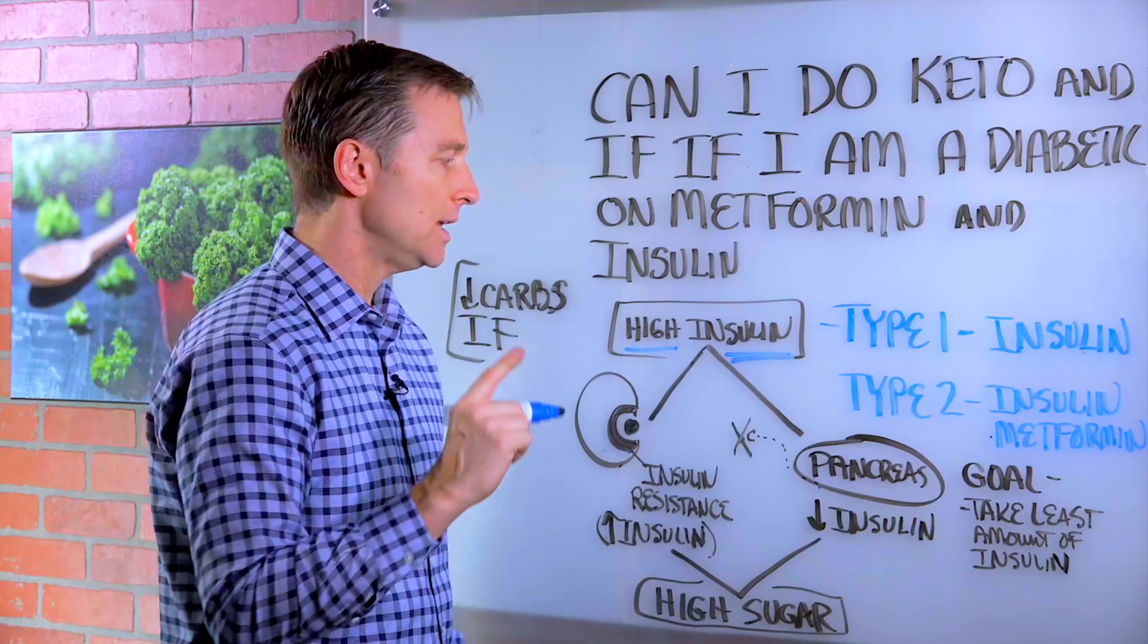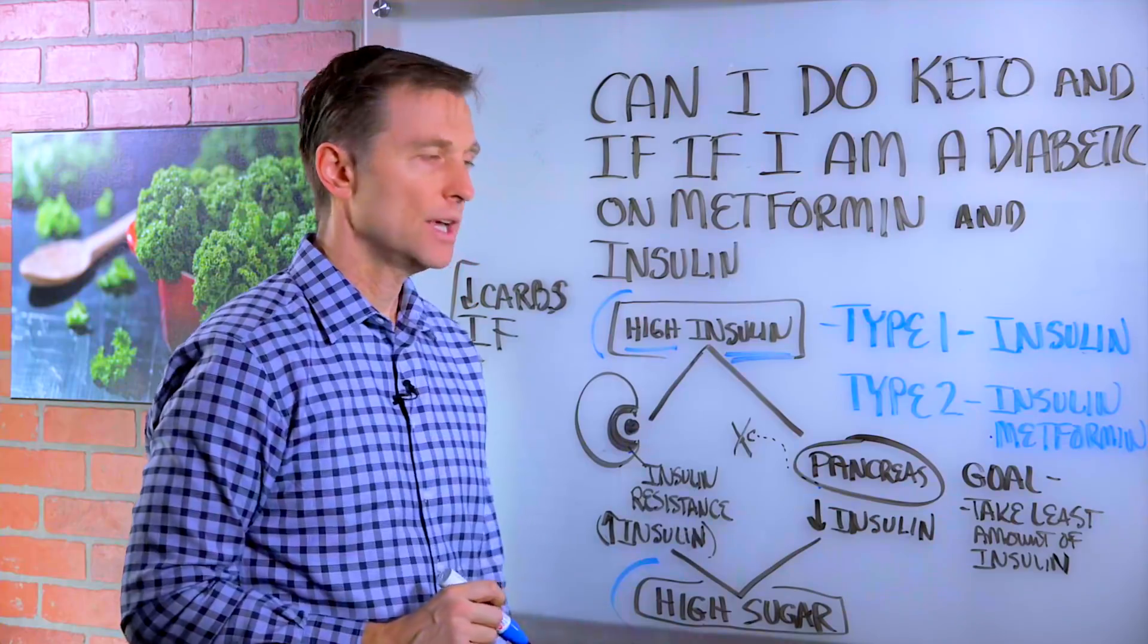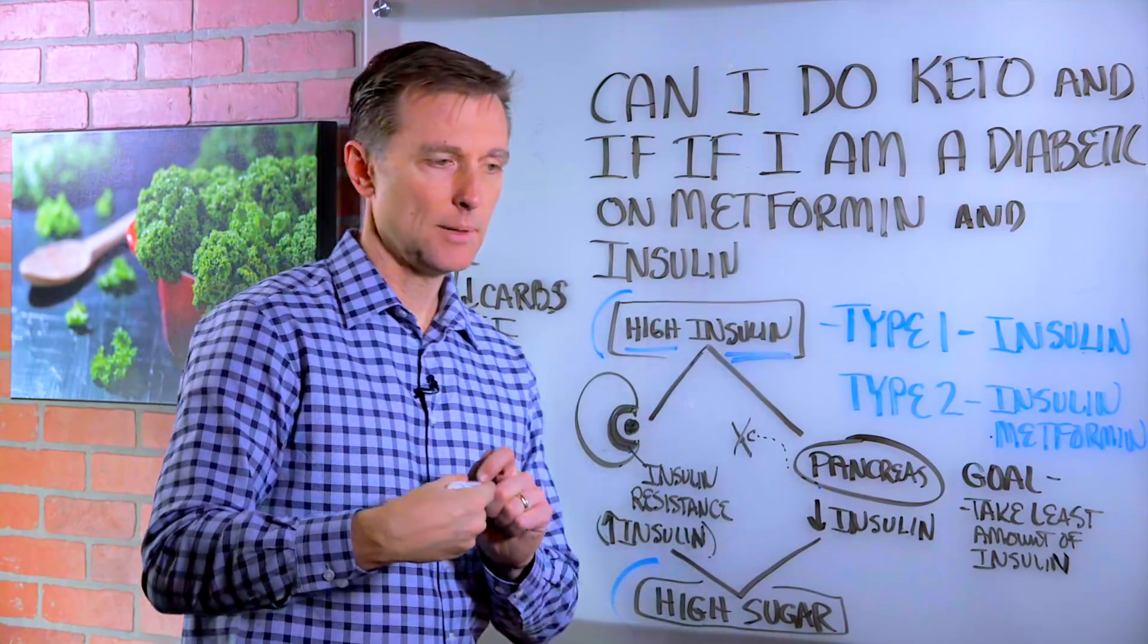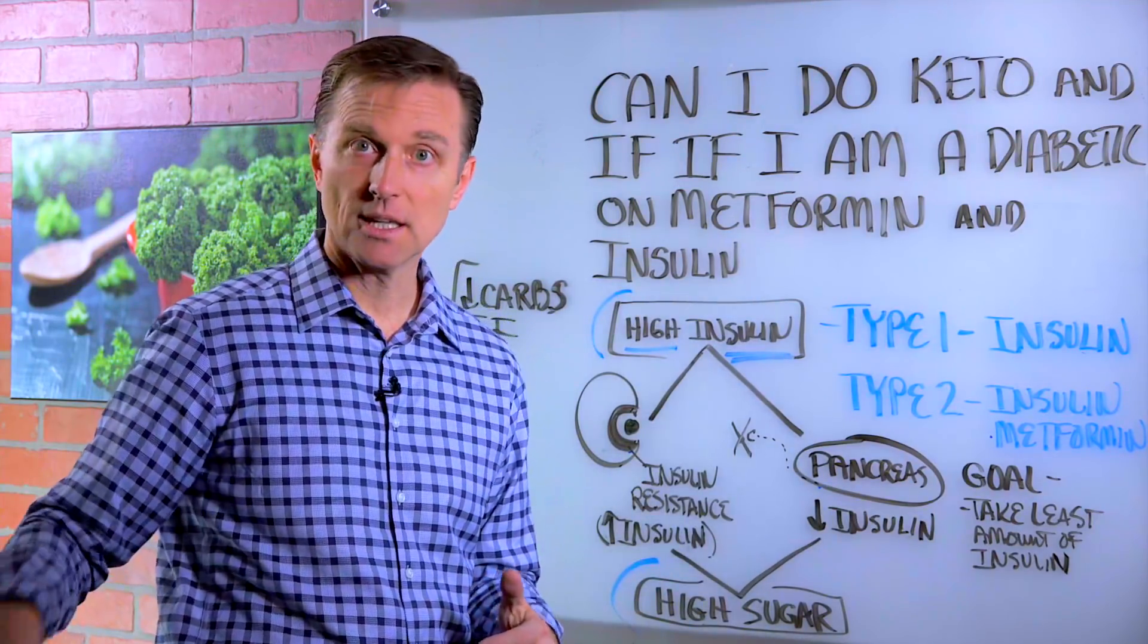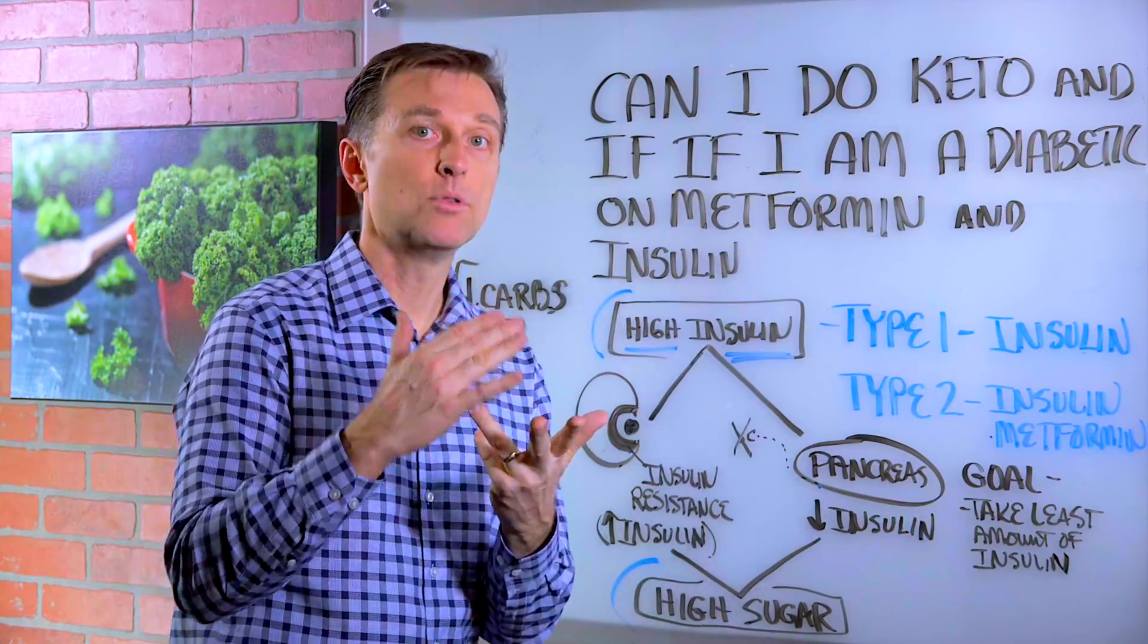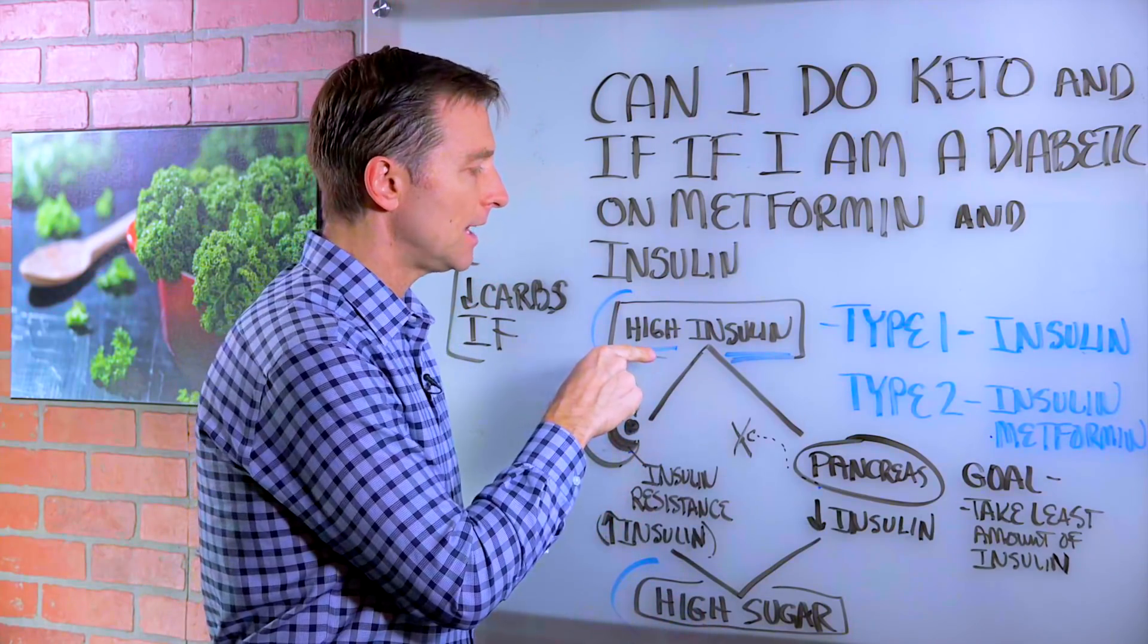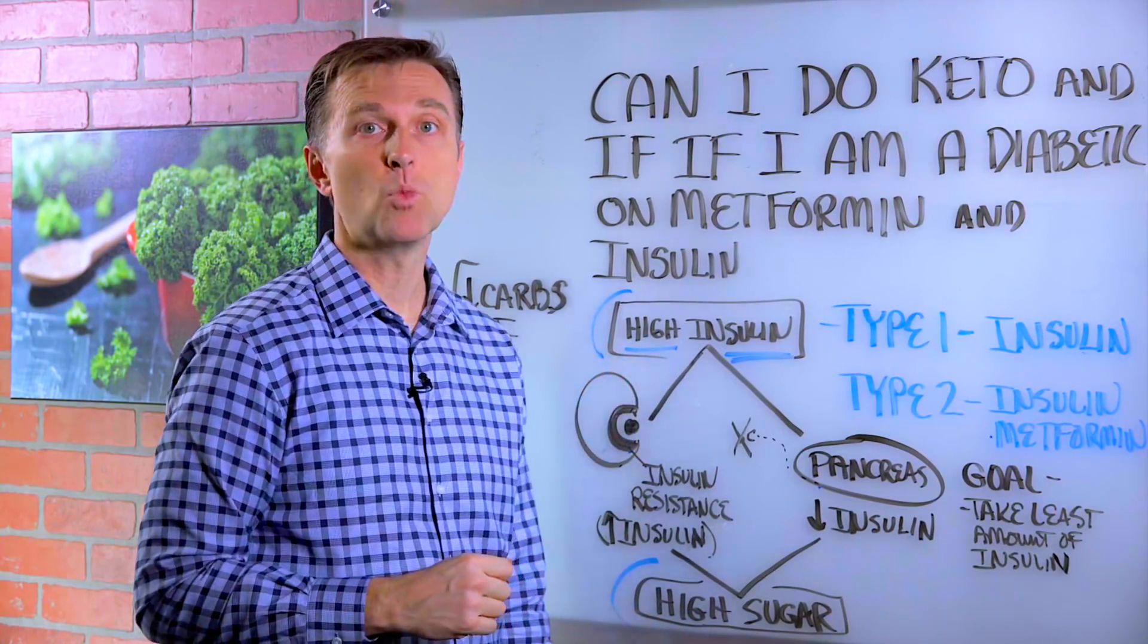Now, it's more dangerous to have high insulin than high sugar. There are more problems. Sustained high levels of insulin destroy the retina, the kidney, the arteries, the brain. Of course, high sugar will do it too, but high insulin creates even more destruction.